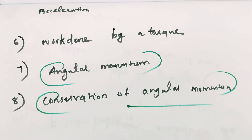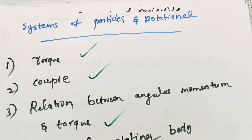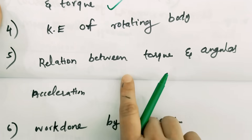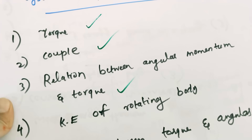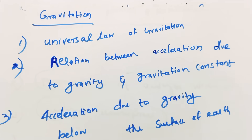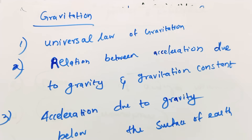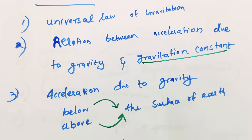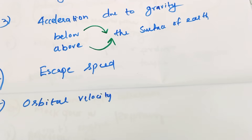Derivation: acceleration due to gravity and gravitational constant, derivation of acceleration due to gravity below the surface of Earth and above the surface of Earth. What is the escape speed? What is the derivation of orbital velocity? These are very interesting questions.